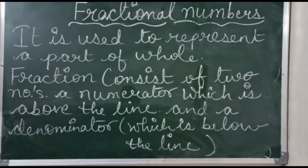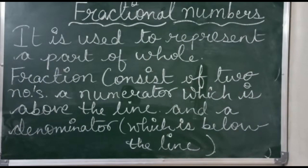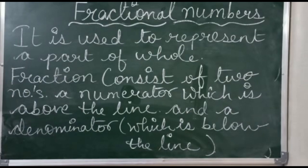A Fraction consists of two numbers: the Numerator, which is above the line, and the Denominator, which is below the line.